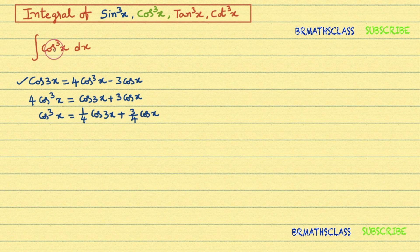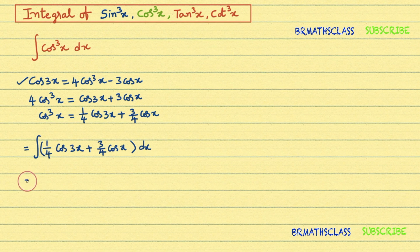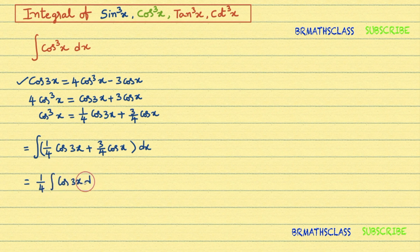In the question, in place of cos³x, we write this expression. So the integral of cos³x dx equals the integral of [(1/4)cos3x + (3/4)cosx] dx. We integrate each and every term: that equals the integral of (1/4)cos3x dx plus the integral of (3/4)cosx dx.